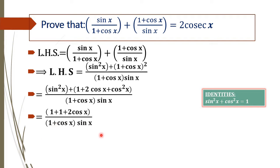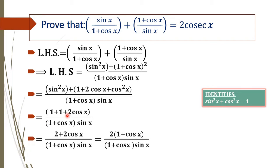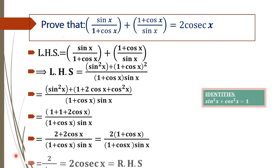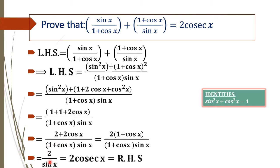This is all divided by 1 plus cos x into sin x. Now, 1 plus 1 gives 2, so we have 2 plus 2 cos x, all divided by 1 plus cos x into sin x. By taking 2 outside, we get 1 plus cos x in the numerator. The 1 plus cos x in the numerator and denominator cancel, leaving 2 by sin x, which gives 2 cos x — equal to our RHS.